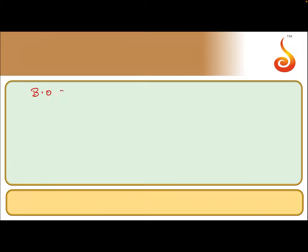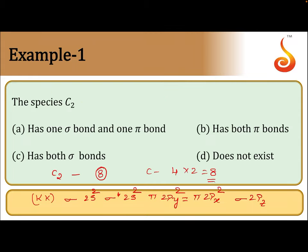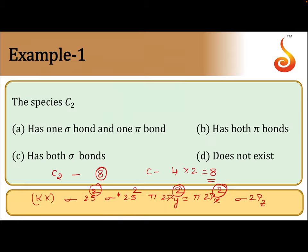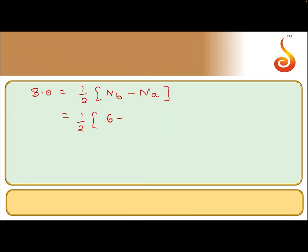Now let us calculate bond order: half into number of electrons in bonding molecular orbitals minus number of electrons in antibonding. That is half into — in bonding: 2 plus 2 is 4, plus 2 is 6. Minus in antibonding only 2 electrons. 6 minus 2 is 4, and 4 by 2 is 2.